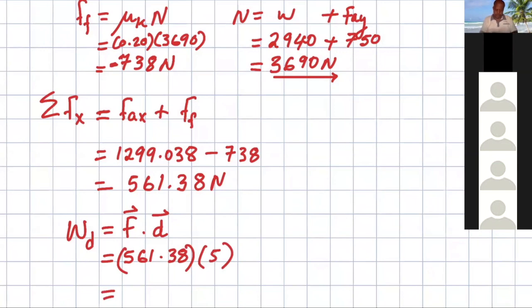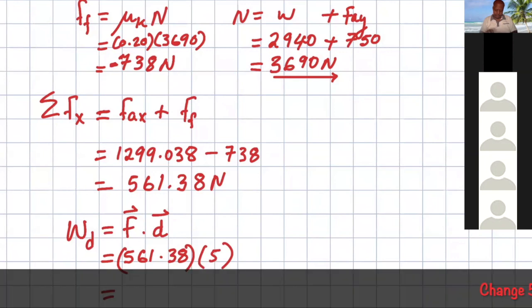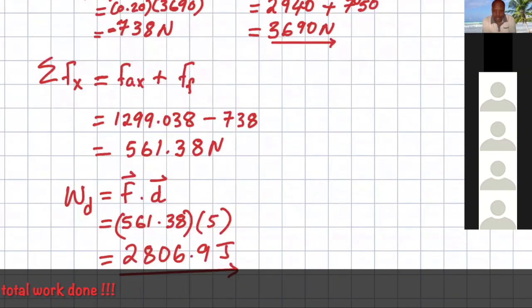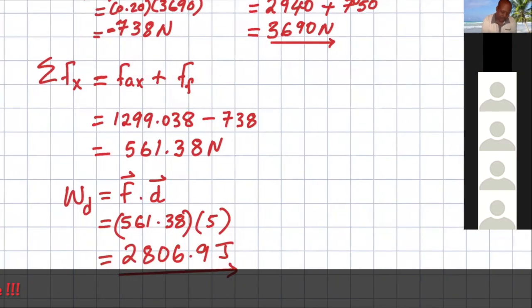That's 561.38 multiplied by 5. So you get 2846.9 joules. So this is the total work done in that direction.